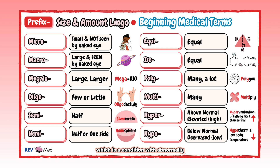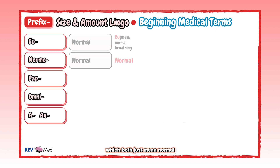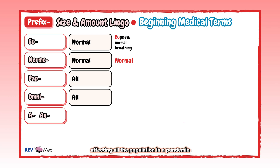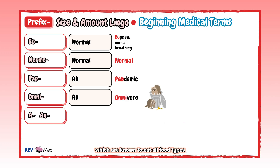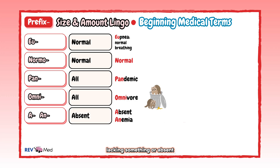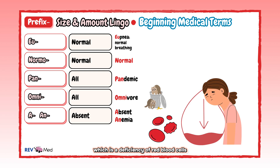Eu and normo both mean normal — in medicine, eupnea means normal breathing. Pan and omni both mean all — think of a pandemic affecting all the population, panorama covering all, and omnivores that eat all food types. The prefix a or an means lacking something or absent — think of anemia, which is a deficiency of red blood cells or hemoglobin in the blood.